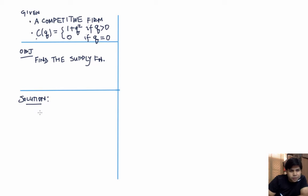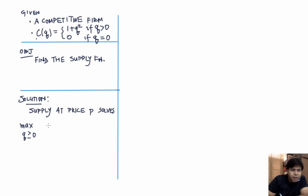The supply function is a solution to the profit maximization problem of the firm at different levels of prices. Supply at price P is simply the solution to the profit maximization problem: maximize with respect to Q the expression P times Q minus C(Q).